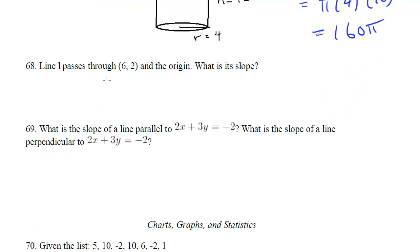Line 1 passes through (6, 2) and the origin. What is its slope? Well, we can use our slope formula here: y₂ minus y₁ over x₂ minus x₁. So let's do 2, our y₂ is 2 minus 0, because this is the point (0, 0), over 6 minus 0, which is 2 over 6, which reduces to 1/3, and that's the answer.